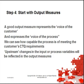Complexity starts with the output measures. A good output measure represents the voice of the customer and expresses the voice of the process. We can see how capable the process is of meeting the customer's critical to quality requirements. Upstream changes in the input or process variables will be reflected in the output measures.